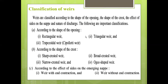The classification of weirs: weirs are classified according to the shape of the opening, shape of the crest, the effect of the sides on the nappe, and the nature of discharge. The important classifications are: first according to the shape of opening, second according to the shape of the crest, and third according to the effect of sides on the emerging nappe.